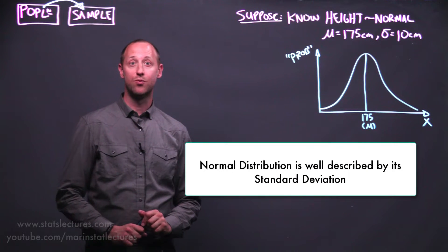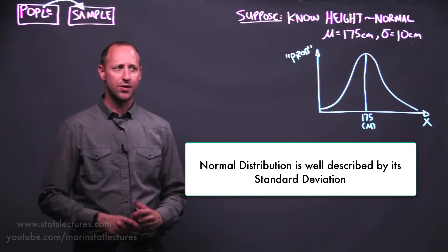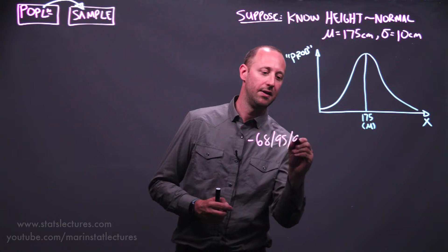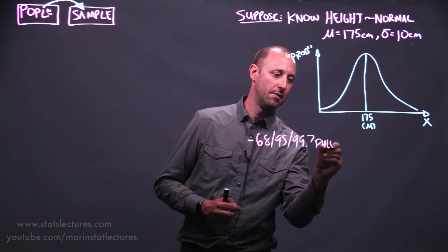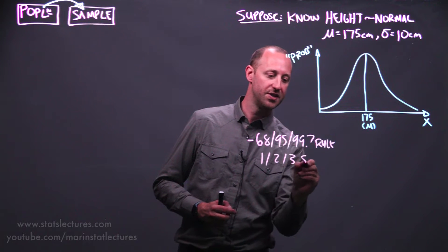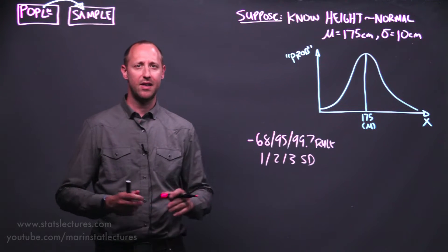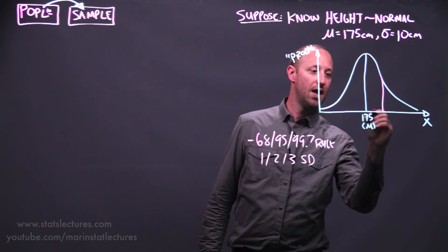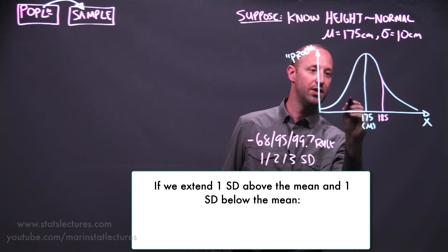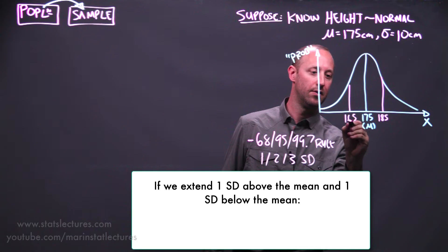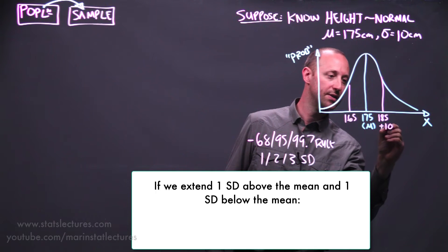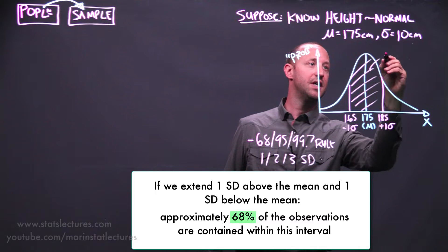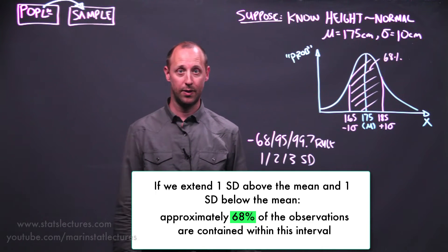The normal distribution is well described by its standard deviation. So there's this very handy 68, 95, 99.7 rule, or 1, 2, 3 standard deviation rule. And again, this is just handy for doing some simple ballpark calculations. So what this tells us is, if we go from the mean and reach out one standard deviation on each side, so if we go plus one standard deviation, minus one standard deviation, approximately 68% of observations are contained within this interval. Here, approximately 68% of individuals will have a height between 165 and 185 centimeters.